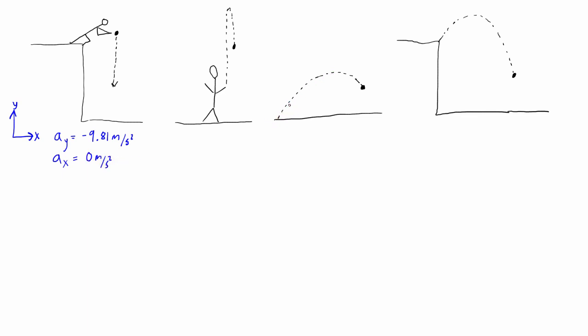Once the object has been launched, it doesn't have an engine propelling it. It's just flying through the air. These problems always ignore the effects of air resistance, so we consider the object to have zero meters per second squared acceleration in the x direction.